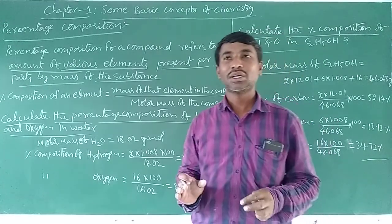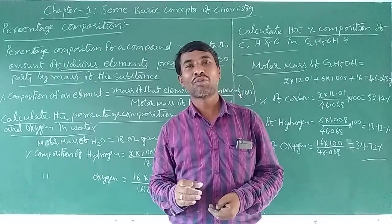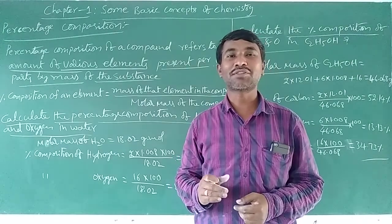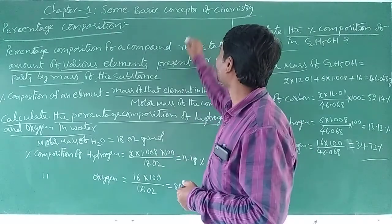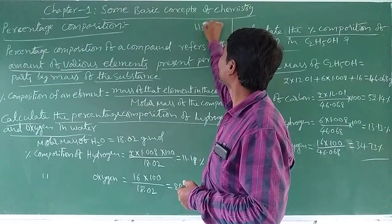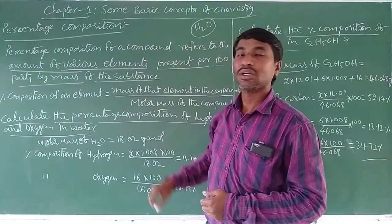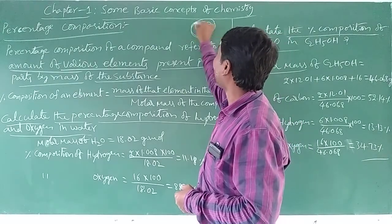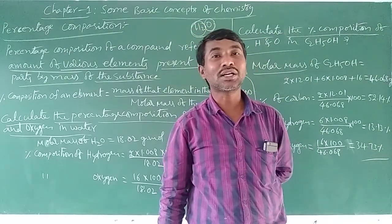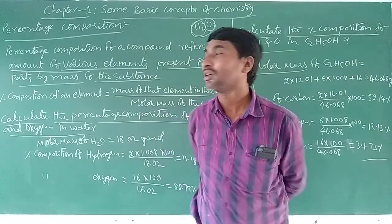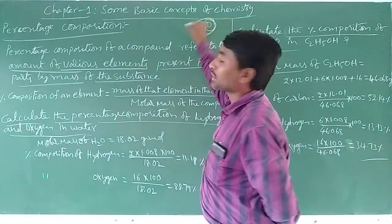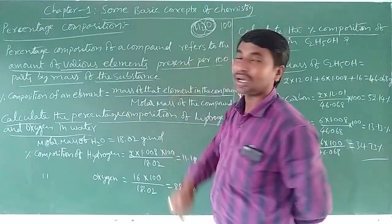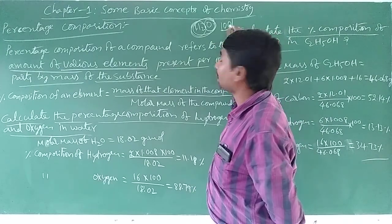Suppose we take the water molecule. What is the formula? H2O. This is the compound. The constituent particles are hydrogen and oxygen. We consider the water molecule as 100% — that is, 100 parts. This is the compound: the amount of various elements present per 100 parts by mass of the substance.